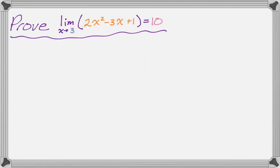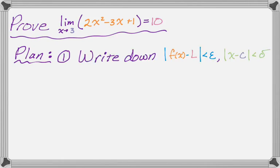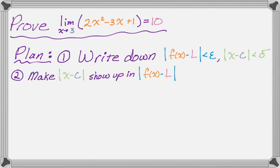I'm going to write down a plan. The first thing I'll do is write down |f(x) - L| < ε and |x - c| < δ, since those are the two absolute value inequalities that determine the whole flow. After that, I'll manipulate the epsilon inequality so that |x - c| shows up — that's what I need to make the proof work. In the process, I'll do something people find strange: I think of it as doing the 'if delta equals something' thing, usually if delta equals 1, to put a bound on some stuff. Then we'll write delta in terms of epsilon, and after that we'll actually do the proof.